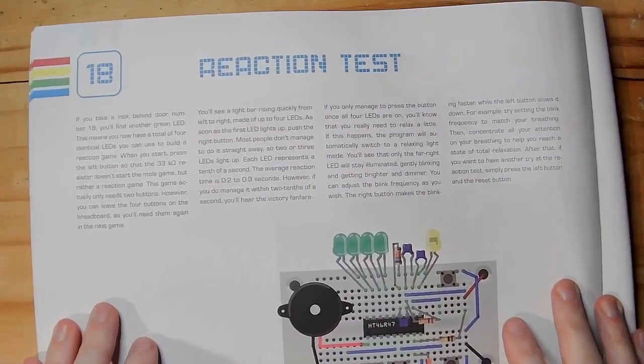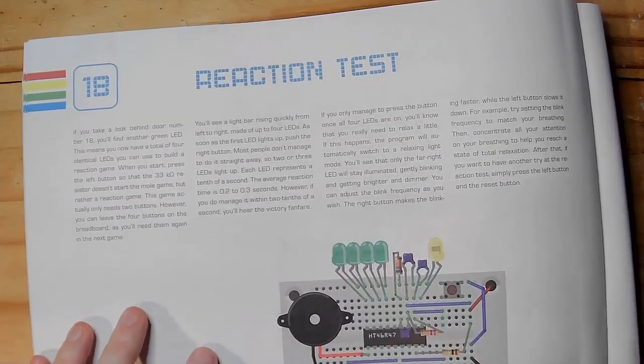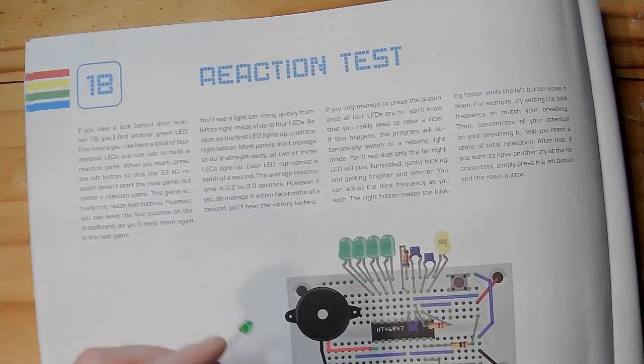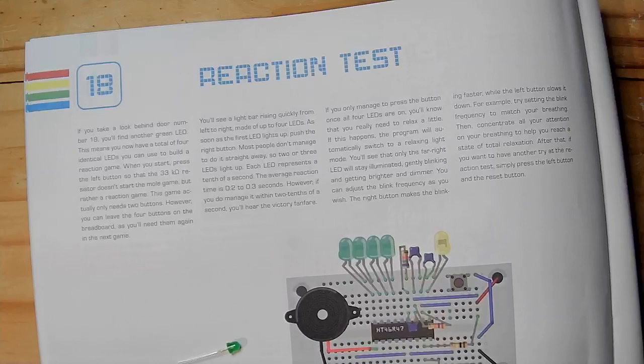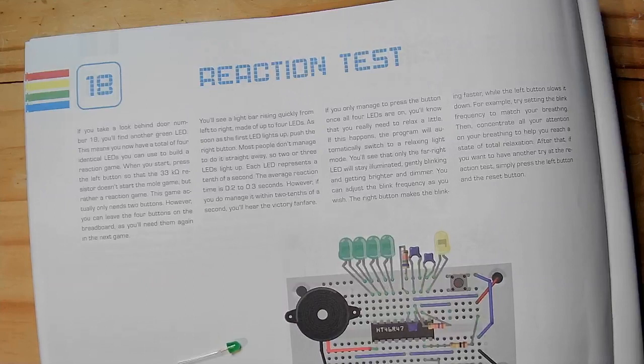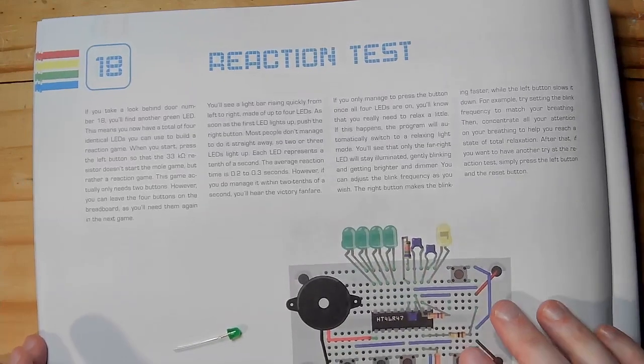So day 18, reaction test. If you look behind door number 18, you'll find another green LED. Yes, that's exactly what we did. This means you now have a total of four identical LEDs that you can use to build the action game. When you start, press the left button so that the 33k ohm resistor doesn't start the mole game, but rather reaction game. This game actually only needs two buttons, however you can leave the four buttons on the breadboard as you'll need them again in the next game.